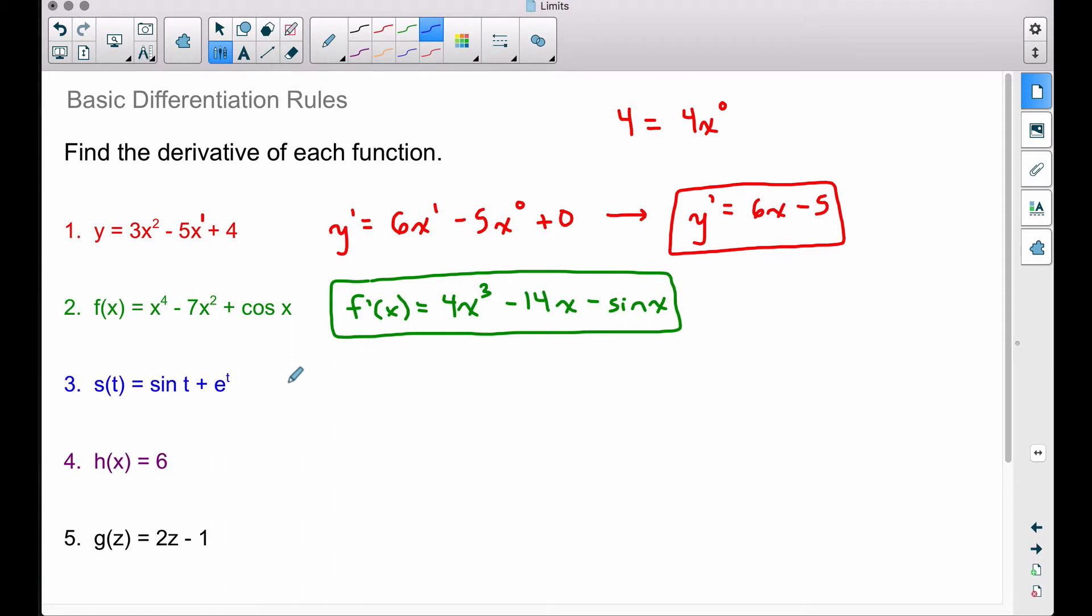With that said, let's look at the third one, s prime of t. Look how fast we're doing these things. The derivative of sine is cosine. So the derivative of sine of t is going to be cosine of t.